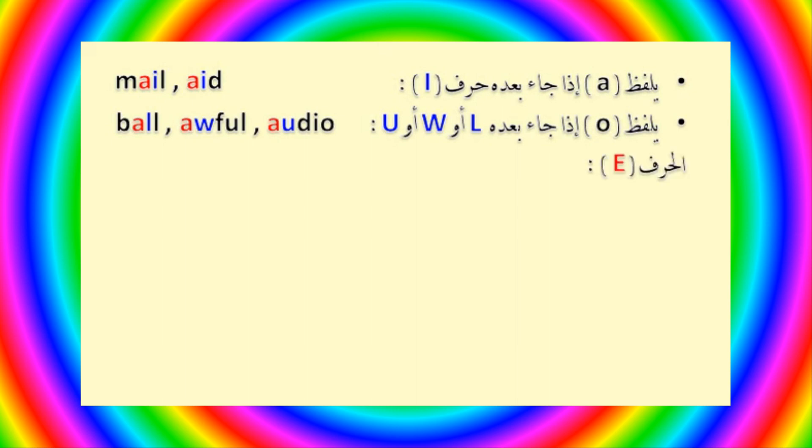ننتقل إلى الحرف الثاني وهو حرف E. أولاً يلفظ ياءً مشبعة إذا جاء مكرراً، مثل: feed, seem.